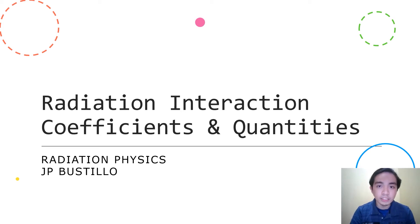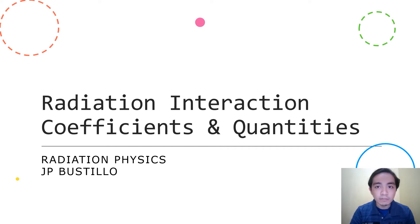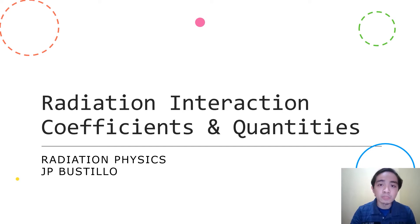Hi everyone. This lecture is about radiation interaction coefficients and other important quantities. We will start by discussing cross-section, mass attenuation coefficient, mass energy transfer coefficient, mass stopping power, and other related quantities. I will be using the International Commission on Radiation Units and Measurements Report No. 85, titled Fundamental Quantities and Units for Ionizing Radiation, the revised version, as my main reference. Let's start.